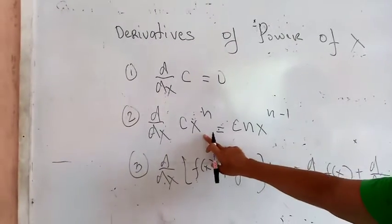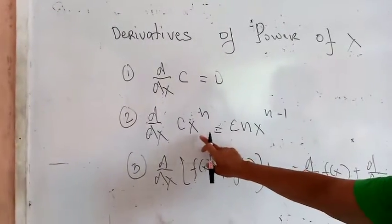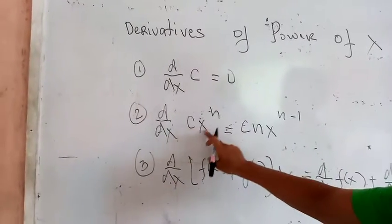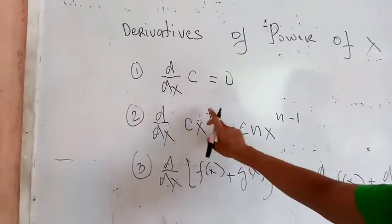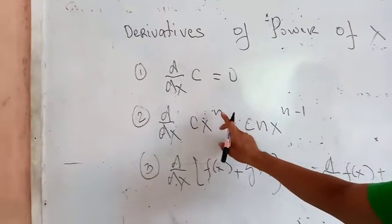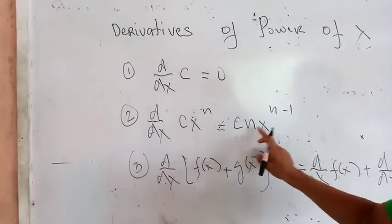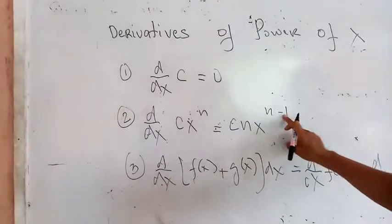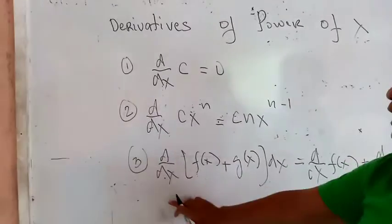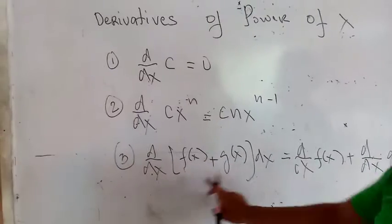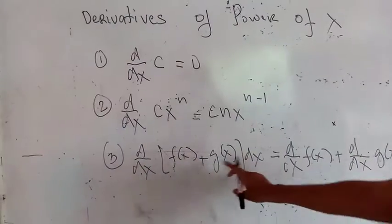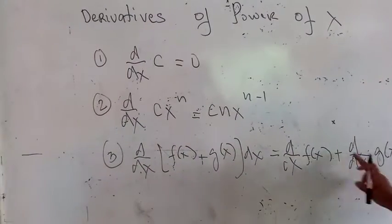Second formula: the derivative of the power of x — or rather, the derivative of constant c times x to the n — meaning your n is your exponent. Then multiply n times c, that is cn, times x to the n minus 1. Third formula: the derivative of two equations will be the derivative of the first equation plus the derivative of the second equation.